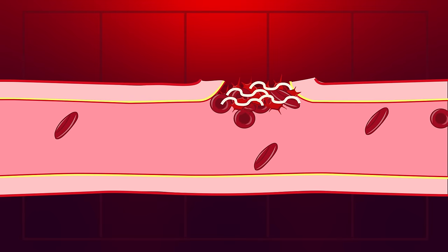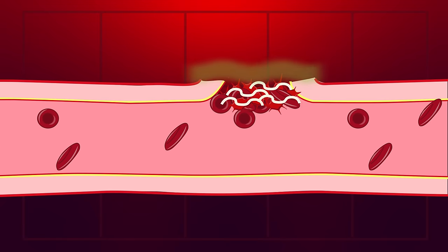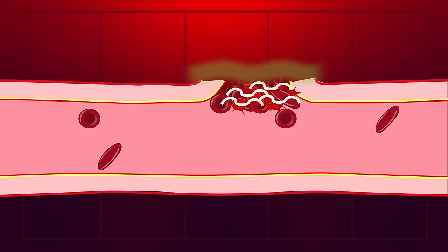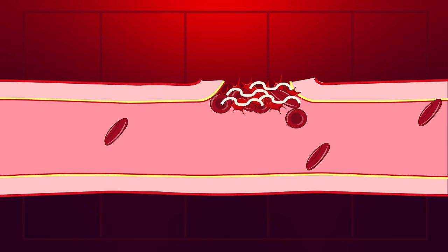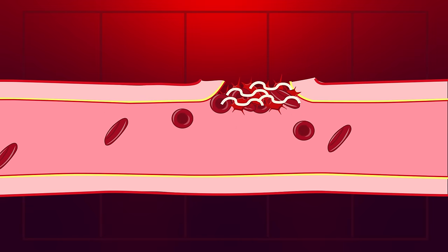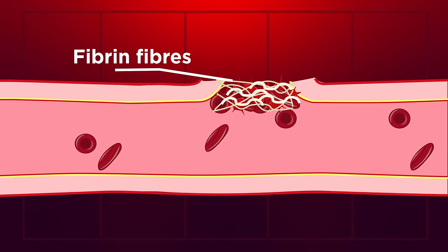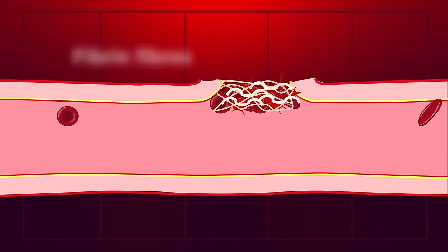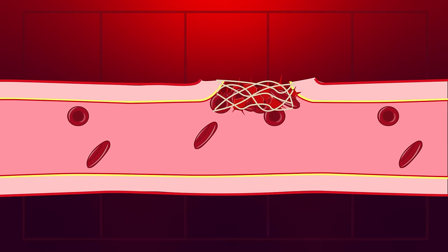At a wound, these soluble fibrinogen proteins are exposed to outside chemicals that aren't normally found in blood vessels. Like with the collagen and platelets, this exposure causes the fibrinogen proteins to turn into sticky fibrin fibers. The fibrin fibers form a mesh, holding all the platelets together and making a much stronger clot.